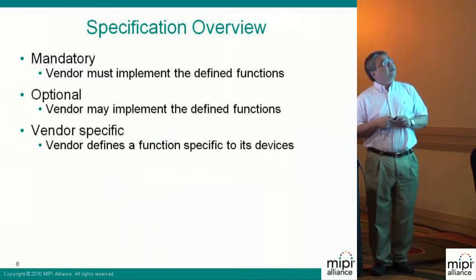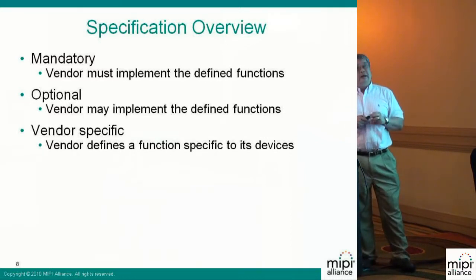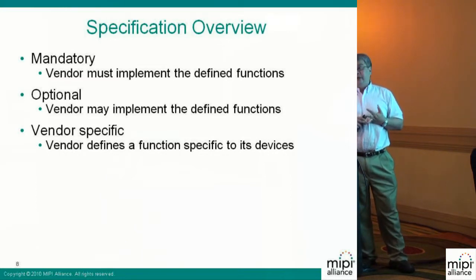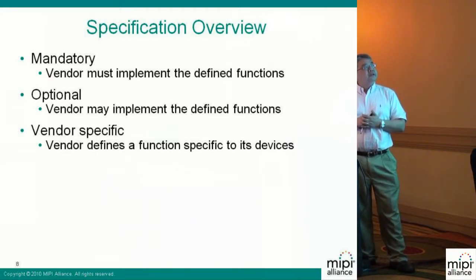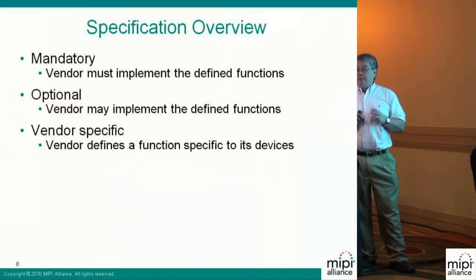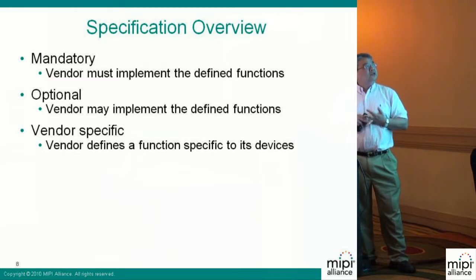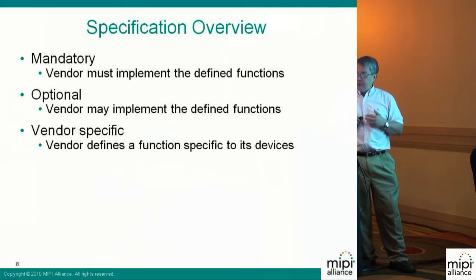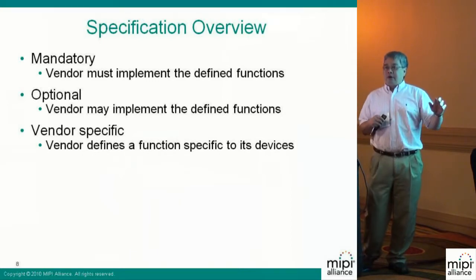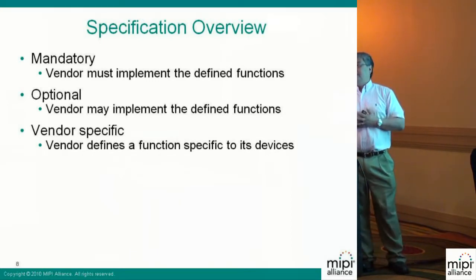We defined our interfaces with three layers. The first layer is what we call the mandatory interface, which supports most common NAND devices. The second layer is the optional interface, allowing vendors to either implement it or not, though optional interfaces may become popular over time. The third layer is the vendor-specific interface, so if you have a high-performance command and want to show differentiation between your product and a competitor's, you can put it in the vendor-specific section.